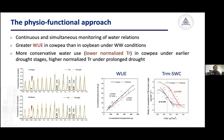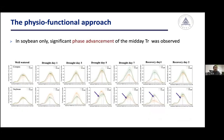These results suggest that being conservative or profligate in water use is actually dependent on the drought stress scenario. Very interestingly, we observed a significant phase advancement of the maximum transpiration rate during the day in soybean only. From day five following water withholding, the peak of daily transpiration occurred several hours earlier in drought-stressed plants than in control plants, and this phase advancement disappeared after water recovery.